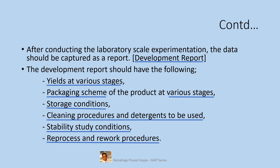Reprocess and rework procedures: reprocess or rework procedures for any possible routine failures should be indicated in the report. Routine failures may include failure of any filtration — because of which there could be some ingress of carbon particles — or recrystallization to remove any organic impurities, reintroduction of reaction mass in case of incompletion of reaction, etc. Any failure that is not part of the development report should be referred to R&D for resolution.